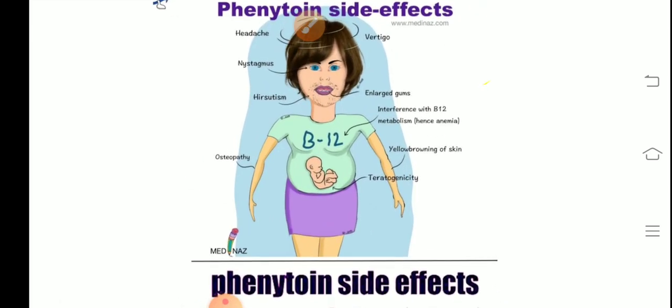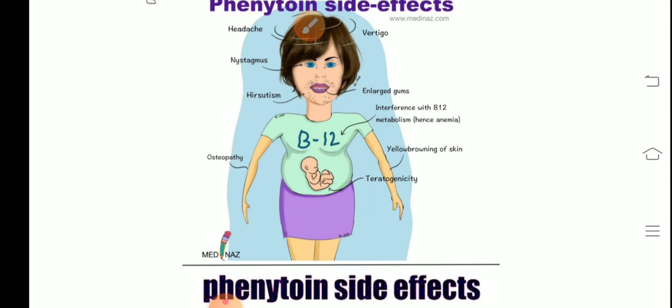And you also see in the figure you will remember the features very easily: headache, vertigo, that is nystagmus that is abnormal coordination of the eyeball, hirsutism that is you are seeing the figure that is abnormal development or abnormal growth of the hairs, enlarged gums, interferes with B12 metabolism, anemia, causes yellow browning of the skin, teratogenicity. तो phenytoin के side effects को याद करना बहुत easy हो गया है.